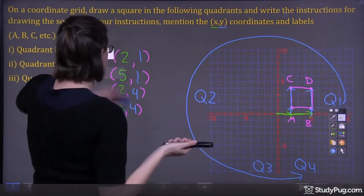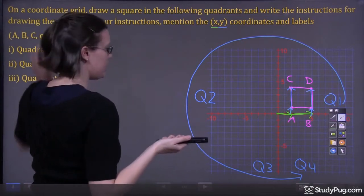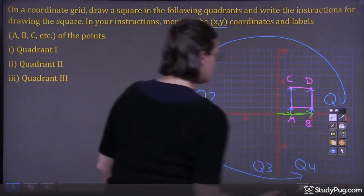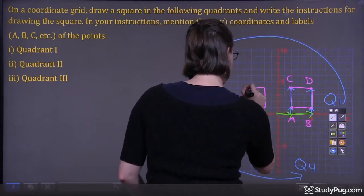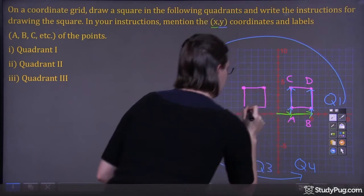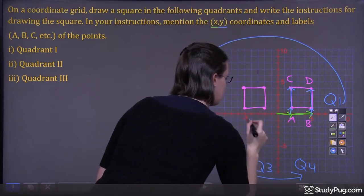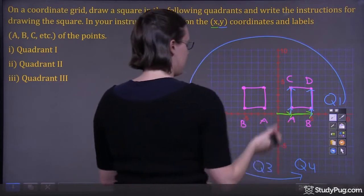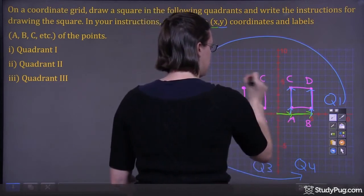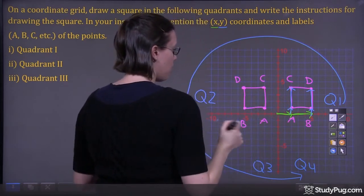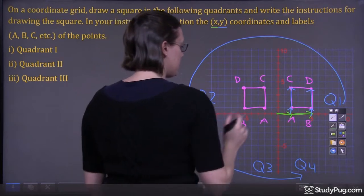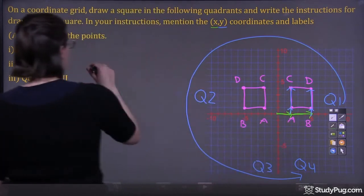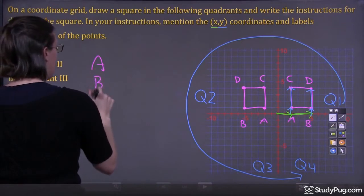Now we're going to do the same thing for quadrant 2. Let's draw a square in quadrant 2 — it can be anywhere we want. Our points are going to be our corners. Let's say this is A, this is B, this is C, and this is D. Now we're going to write out our points to get our coordinates. Remember, we have X and then we have Y.